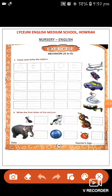Good morning children. How are you all? Hope you all are fine. So here children, what we have to write? We have to write the letters. What you can see here? A to E. As we have completed writing A to E like that way, only we will trace and write the letters.